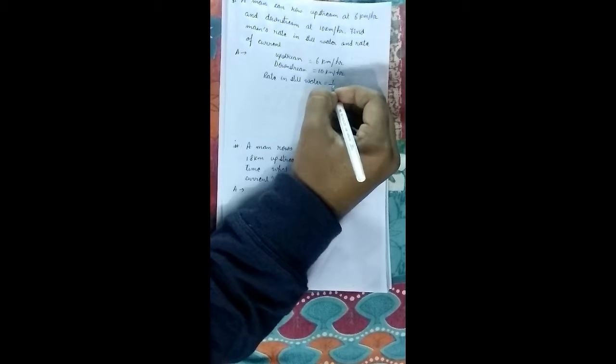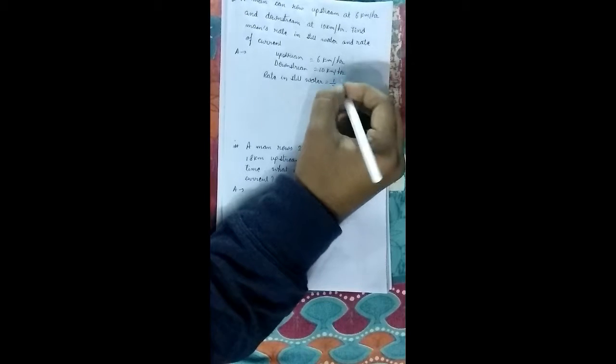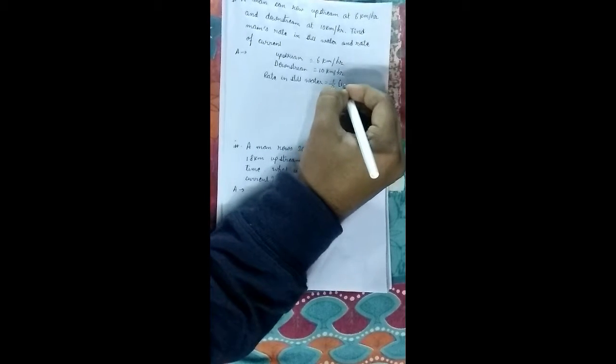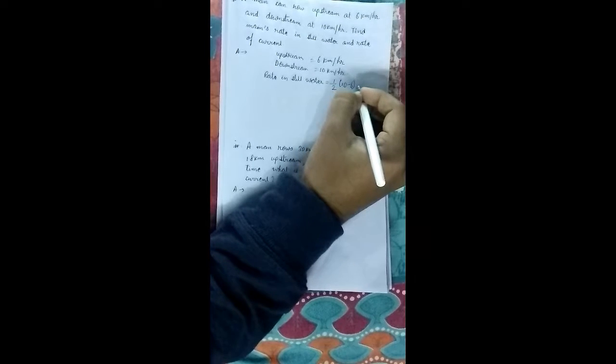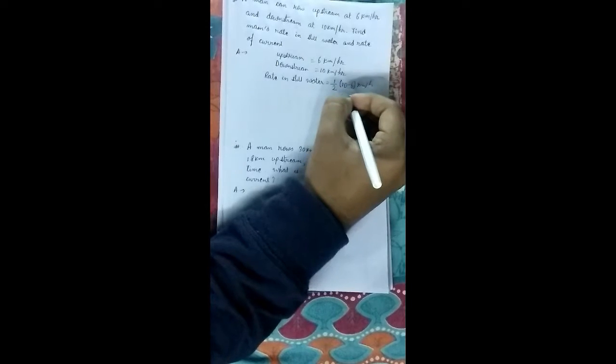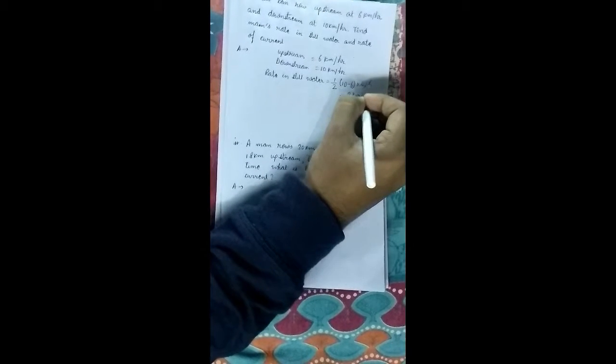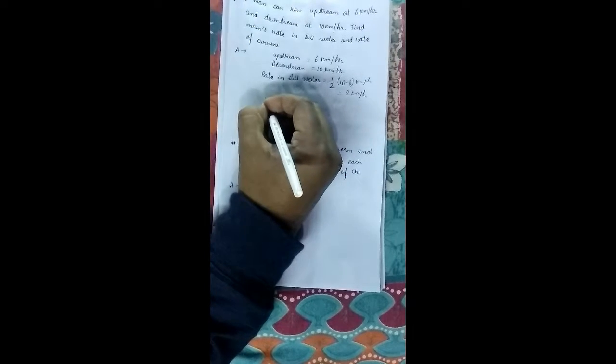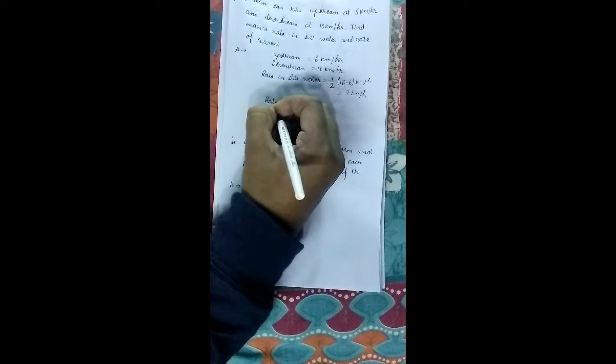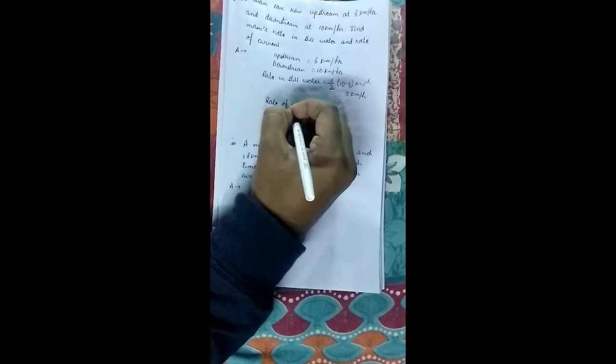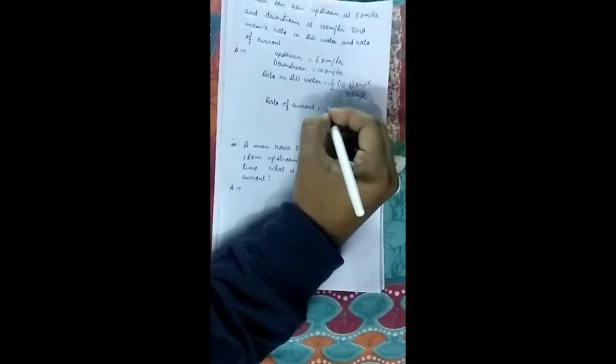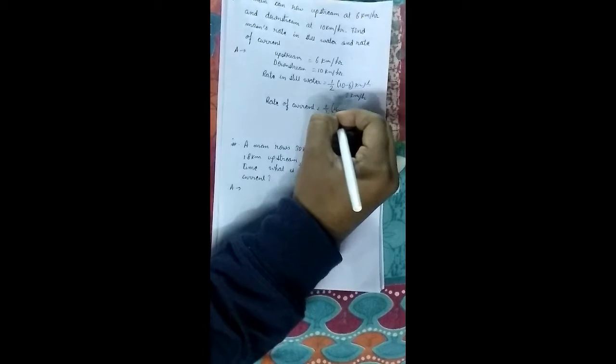half of the subtraction between this 10 minus 6 km per hour. That is 10 minus 6 equals 4 means 2 km per hour and the rate of current will be half of addition of both of these.